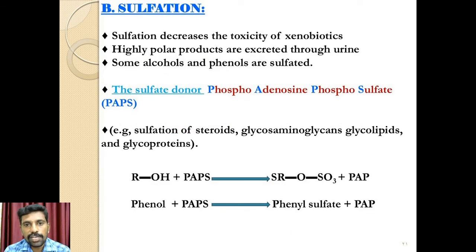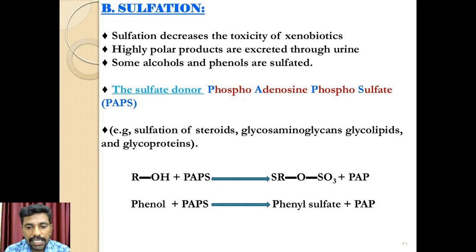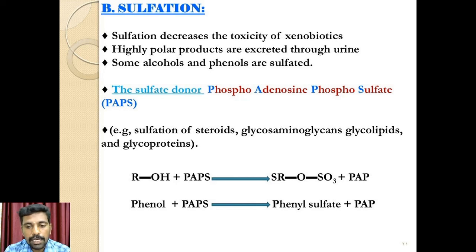The 2nd reaction is sulphation. Sulphation is an important pathway of metabolism for a range of endogenous components including steroid compounds, glycolipids, glycoproteins, glycosaminoglycans and small peptides. Xenobiotics also undergo conjugation by sulphation, which generally leads to reduced biological activity in the body. Phenolic and alcoholic compounds are conjugated with the sulphate molecule, and the sulphate group is transferred from phosphoadenosine phosphosulphate (PAPS) to the particular xenobiotic compound to produce a more soluble form. For example, phenol reacts with PAPS to produce phenyl sulphate and PAP.